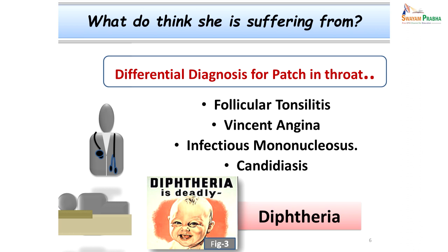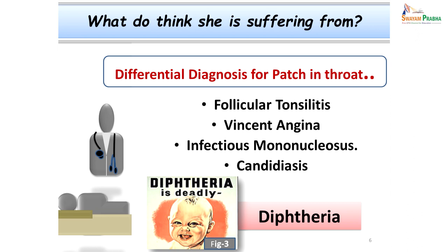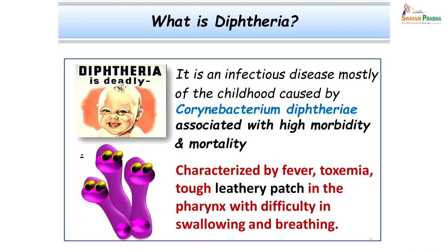The clinical diagnosis was made; however, laboratory confirmation is quite important. What is diphtheria? Diphtheria is an infectious disease mostly of childhood caused by Corynebacterium diphtheriae. It is associated with high morbidity and mortality. Clinically, this disease presents as fever, toxemia, a tough leathery patch in the throat which can be a reason for choking, and respiratory obstruction sometimes leading to fatality.